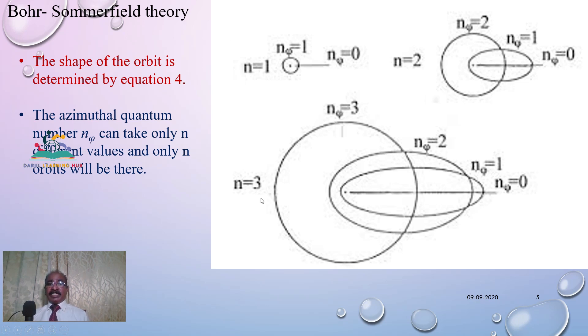The azimuthal quantum number n_φ can take only n different values and only n orbits will be there. For example, if we take the third orbit, n equal to 3, n_φ will also take three values starting from 1, 2, 3. So we have three values. n_φ can take three values for n equal to 3.